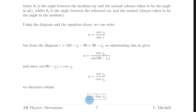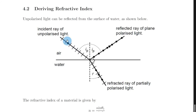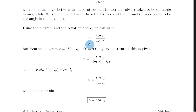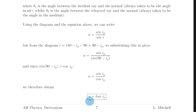We've now got our final equation for refractive index n in terms of Brewster's angle ip. To quickly recap: we think about unpolarized light being reflected from the surface of water, with some light also transmitted through. Brewster's angle is the angle of incidence which causes the reflected and refracted rays to be at 90 degrees to each other. We start with n equals sine theta 1 over sine theta 2 from higher physics, rewrite it as n equals sine ip over sine r, express r as 90 minus ip using geometry, substitute in to get n equals sine ip over cos ip, and simplify using tan to get n equals tan ip.